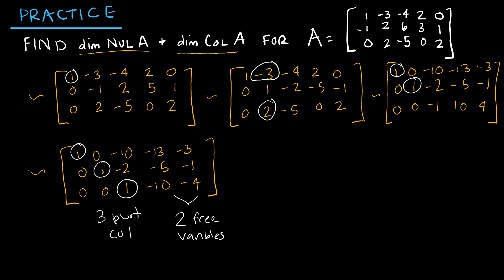So that makes it very easy to answer the question, which says the dimensions of the null space of A is equal to the number of free variables, which is 2. And the dimensions of the column space of A is equal to the number of pivot columns, which is 3.